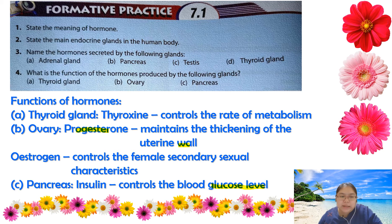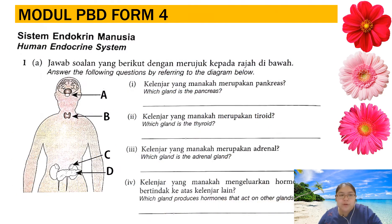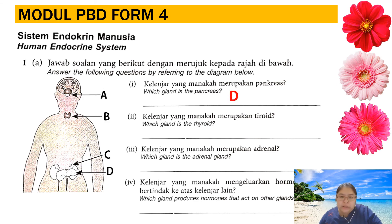When answering, mention the organ/endocrine part, then the hormone it produces, then explain the function of that hormone. Now we move to the module exercise for Chapter 7.1. Question one identifies glands from a diagram: pancreas is label D, thyroid is label B, adrenal gland is label C, and the gland that produces hormones controlling other glands (pituitary) is the master gland.